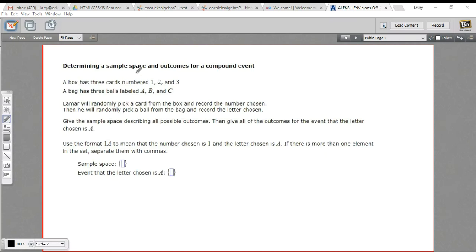In this problem, we're being asked to determine a sample space and an outcome for something called a compound event. We've dealt with single events so far, flipping a coin or picking a marble out of a bag, basically doing one thing. A compound event means you're doing a couple of different things.